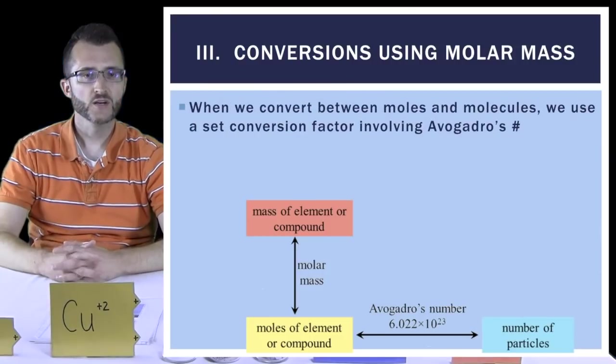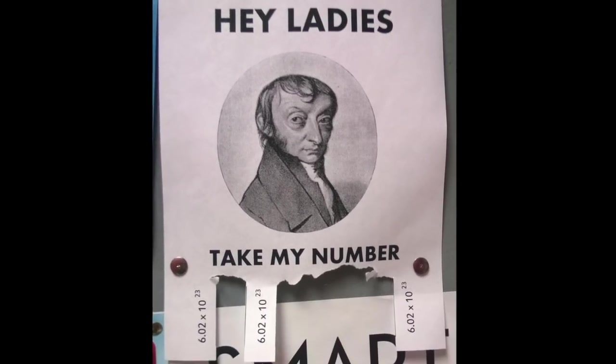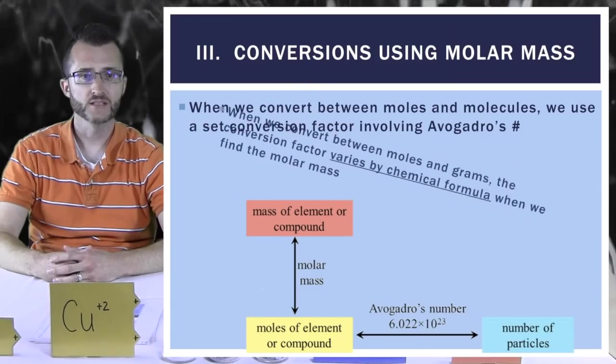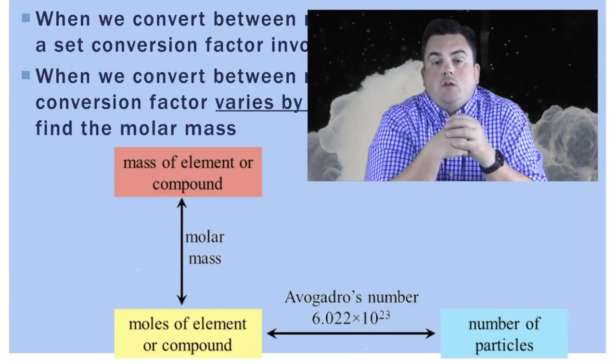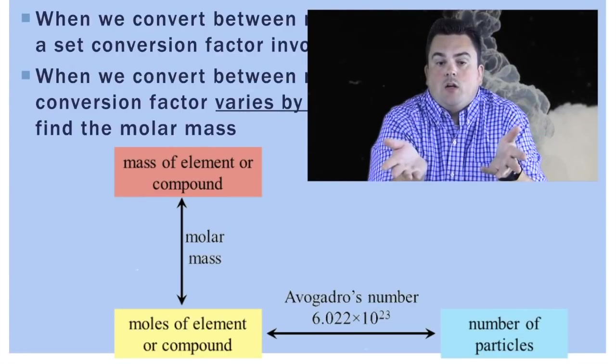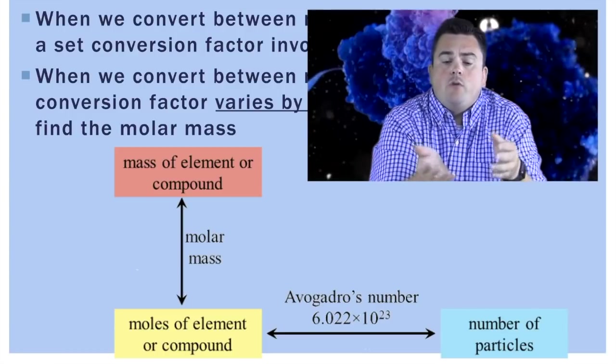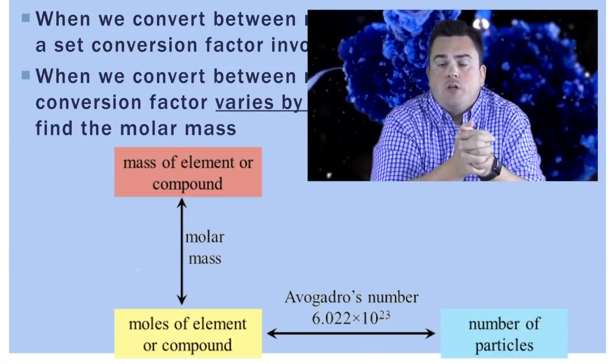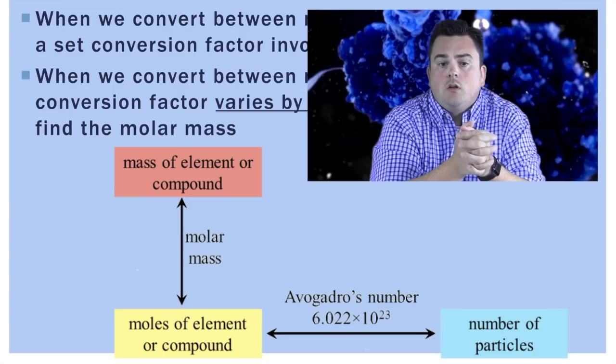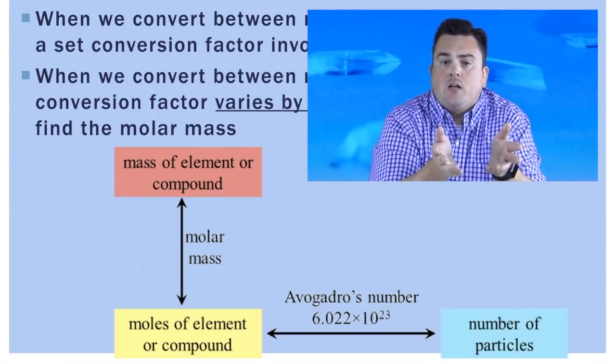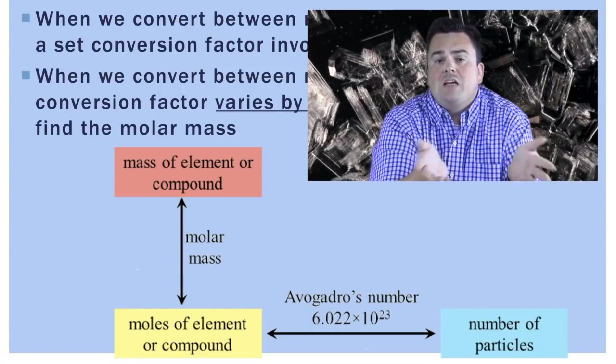Conversions using molar mass: When we convert between moles and molecules, we use a set conversion factor involving Avogadro's number. When we convert between moles and grams, the conversion factor varies by chemical formula when we find the molar mass. So taking a look at our graphic here, if you want to go from mass of an element or compound to moles, you're going to use molar mass and that's going to vary by compound. If you want to go from moles into particles, you'll always use Avogadro's number. Notice there's no direct arrow from mass of an element or compound to the number of particles. So if you are asked to go from mass into particles or particles into mass, you will always have to convert into moles first.